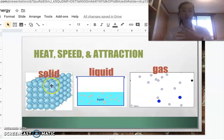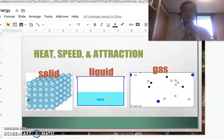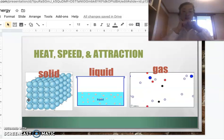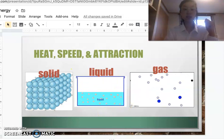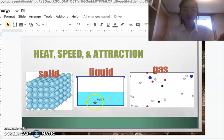And particles in a solid actually do not move very much. As you can see in the picture, they just vibrate very close to each other and they have a lot of attraction. But as you can see in this example, the liquid, the particles are moving a little faster. And obviously the gas particles are moving the fastest.